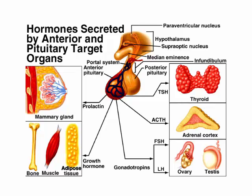Then we have growth hormone, which tells your body to grow. You have receptors on adipose, muscle, and bone for growth hormone. As you get older, you lose those receptors, so growth hormone stops working the same way.